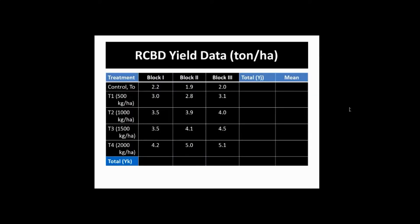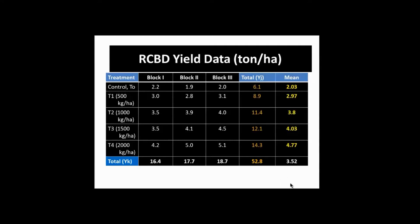Now we'll go to the yield data. You will see the different treatments from control to the last treatment, with yield values for Block 1, Block 2, and Block 3. We compute the total and the mean, as well as the block mean and the overall mean. The grand total is 52.8. The number of observations is 15, so the grand mean — the summation of all observations divided by 15 — is 3.52.